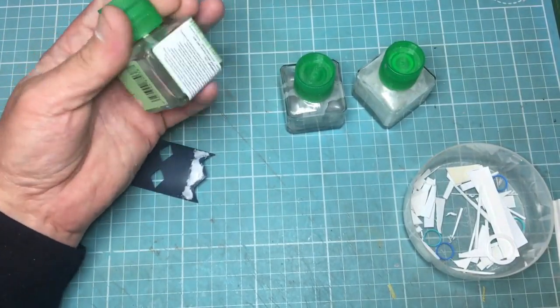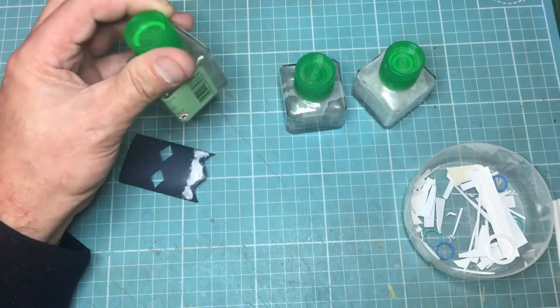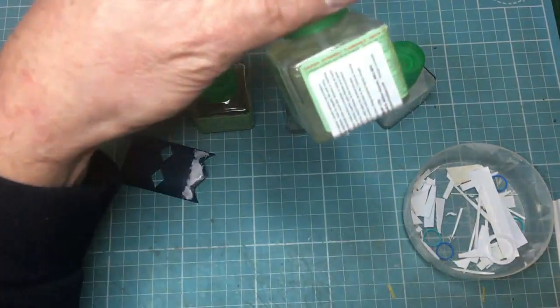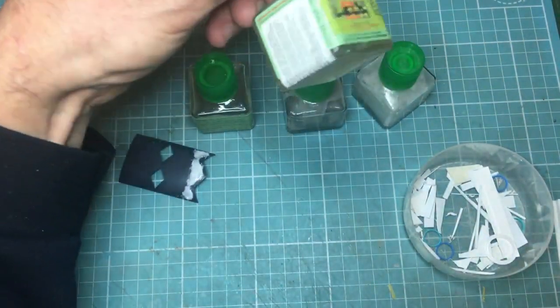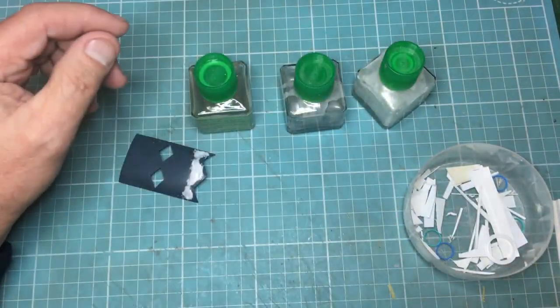Basically, the first thing you need to do is use some Tamiya extra thin. I'd recommend, out of all the plastic cements, you could perhaps try it with this plastic weld. I think that would probably work very well. Maybe when this bottle gets low I'll try it and let you know how I get on.